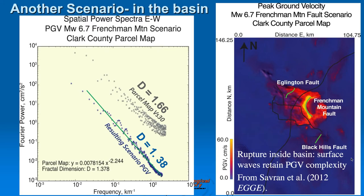For another scenario — an earthquake within the basin on the Frenchman Mountain fault — we again have the same 1.66 fractal dimension from the VS-30 map itself, but now a 1.38 fractal dimension on the resulting scenario PGV. Perhaps when rupturing inside the basin, the surface waves, not having to channel into the basin from elsewhere, retain more of their complexity.